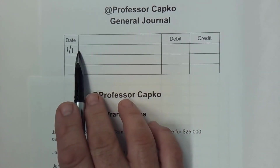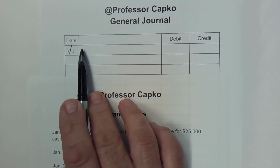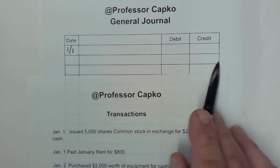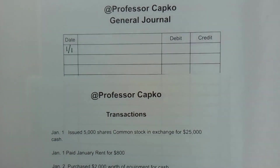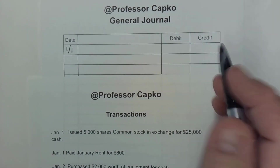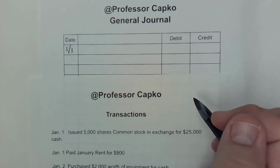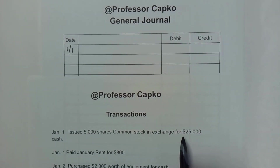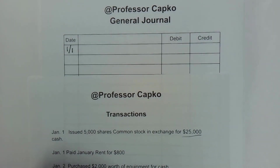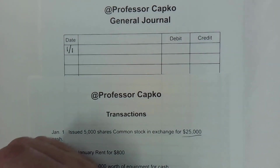So you can remember the debits are going to be first and to the left, and then any credits are going to be indented to the right. Since our first transaction we're receiving $25,000 cash, that means our cash account — which is an asset — is going up. So we're debiting that.